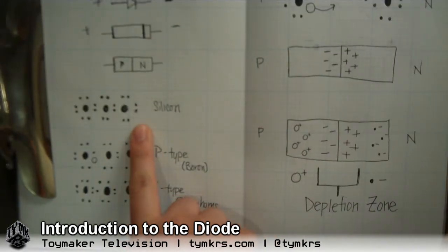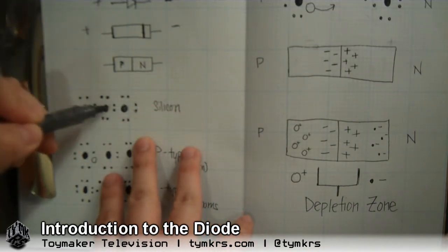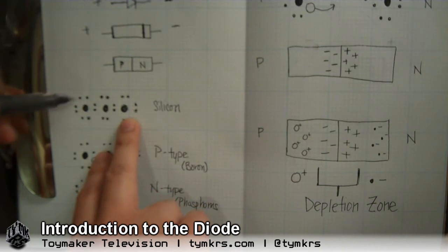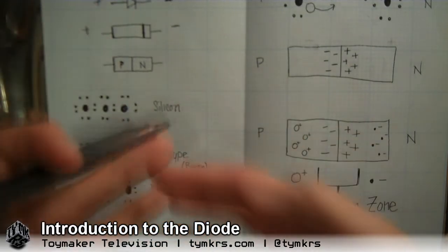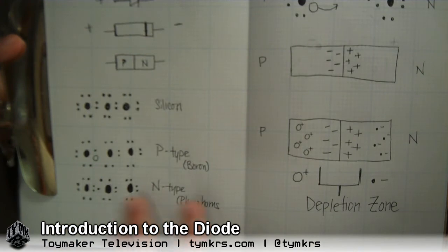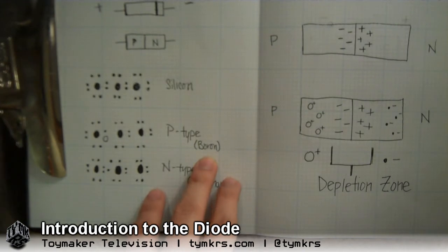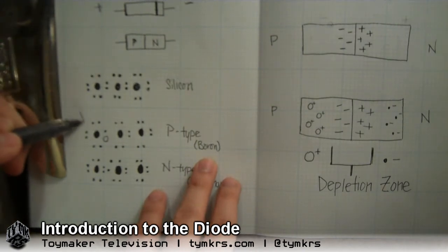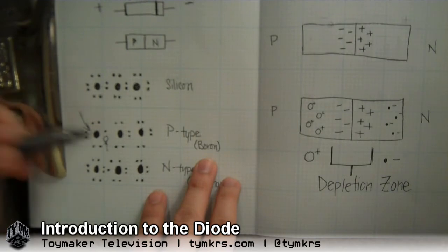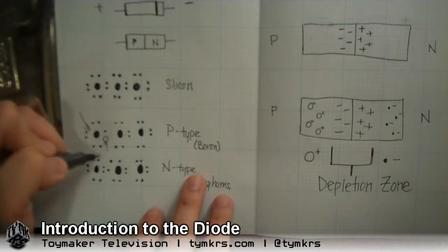Let's look first at a pure semiconductor — silicon. Here are three atoms of silicon, and around them each atom has eight electrons. When they bond together, they bond happily. Through a process called doping — kind of like spiking the punch — you put in, say, boron. This atom of boron has one less electron, notated by a circle. It's missing an electron. These are known as holes, like holes in the ground.